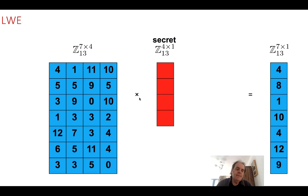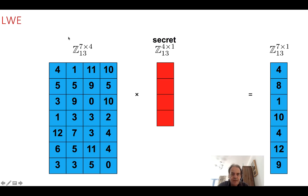The difficult problem we have with learning with errors is that we can have a random matrix of values and then we can multiply it by a secret to find an output. In this case we have a 2D matrix — integers Z — that is 7 by 4: 7 rows and 4 columns. The modulus we use is 13, which is a prime number, so all our operations are mod 13. You won't find any values greater than 12 because it's mod 13.